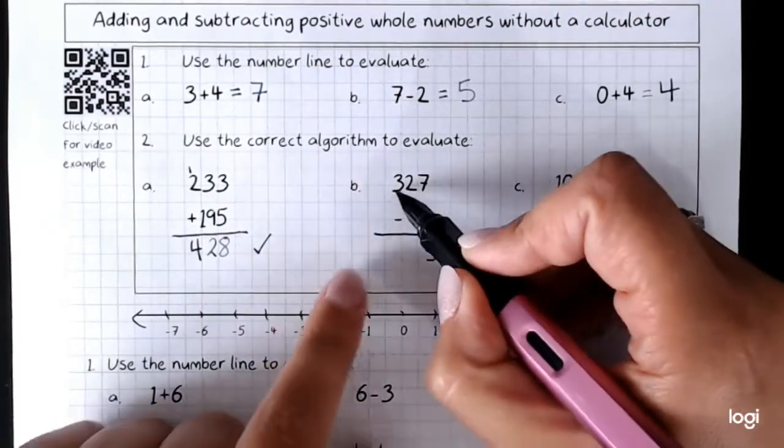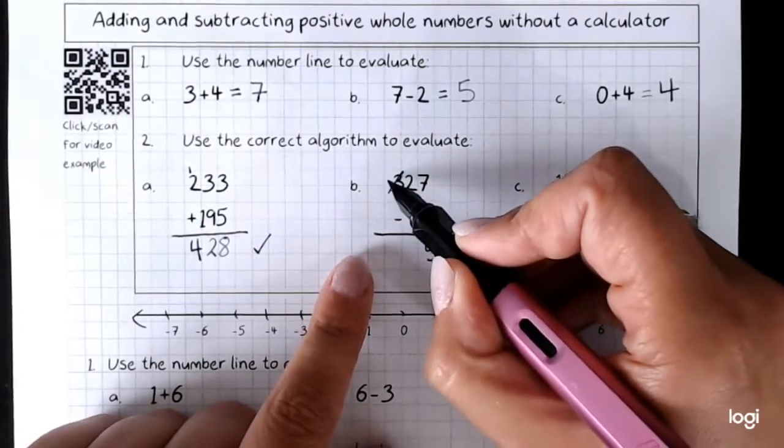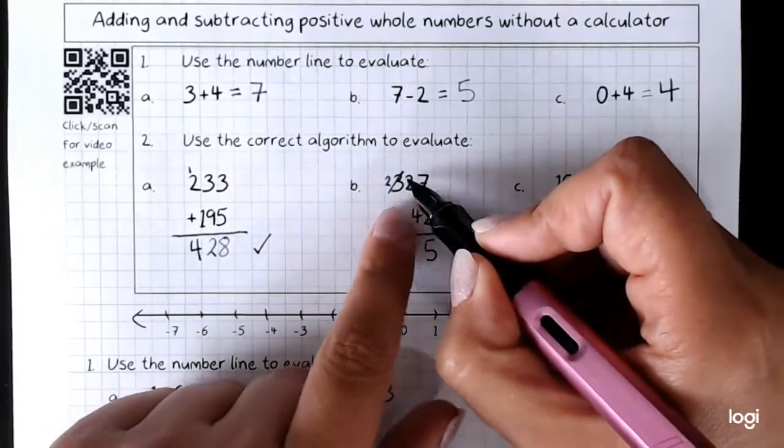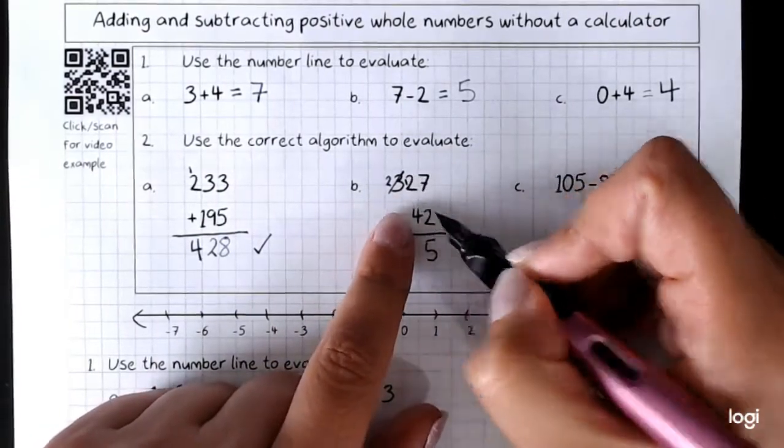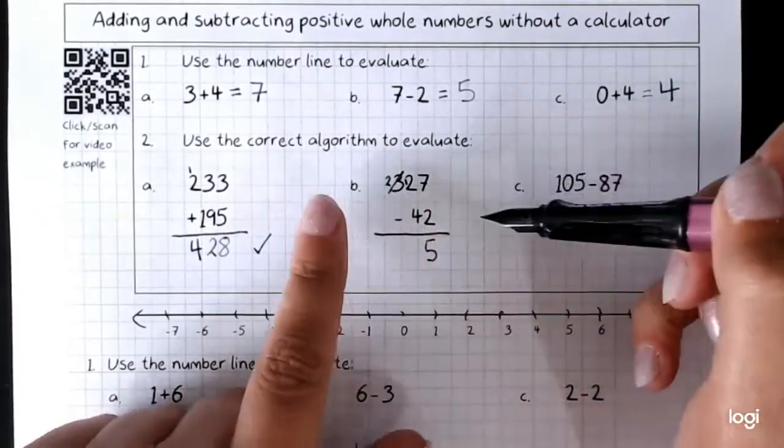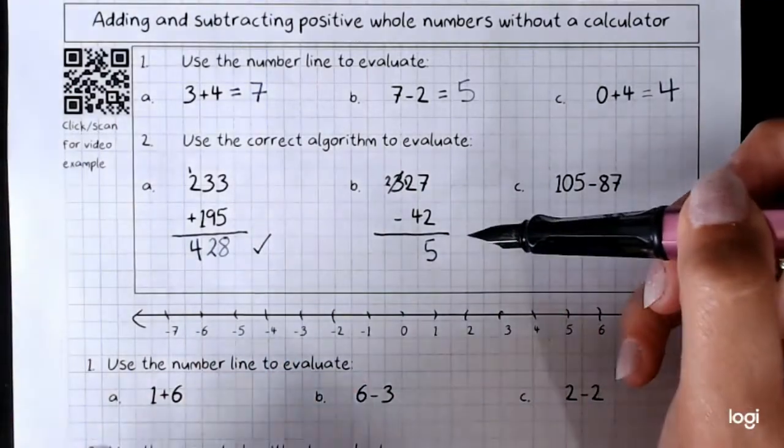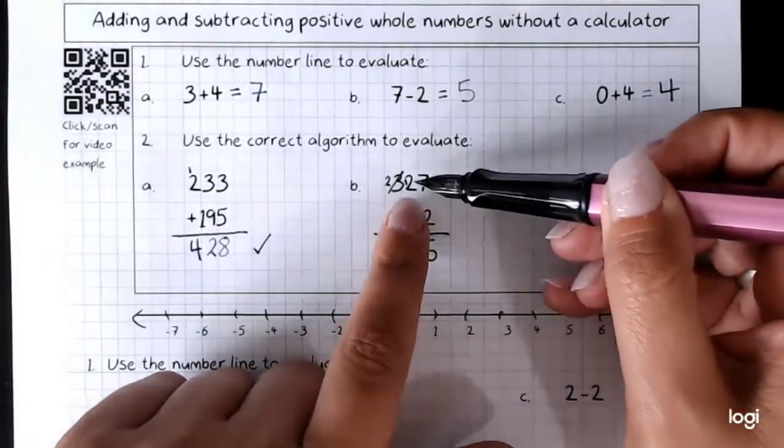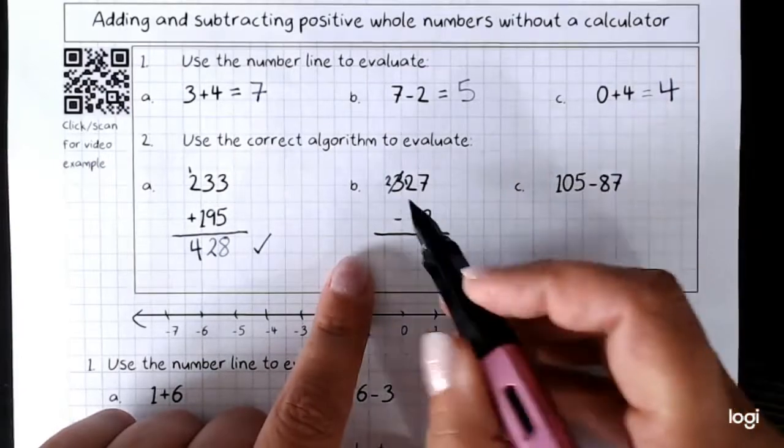Here I've got a 3. I'll take away 1, leaving that at 2 and move the 1 to here. So I've got 12. 12 take away 4 is 8.